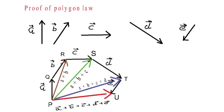Similarly, if we look at the three points P, T, and U, they also form a triangle. In this triangle, PT vector plus TU vector will be equal to PU vector. PT vector is equal to A vector plus B vector plus C vector plus D vector, and TU vector is equal to E vector. Therefore, PU vector will be equal to A vector plus B vector plus C vector plus D vector plus E vector.